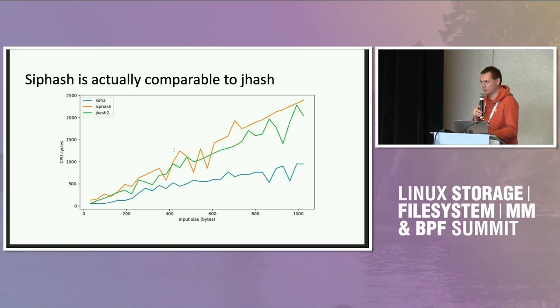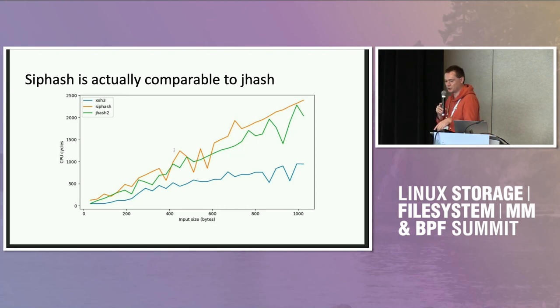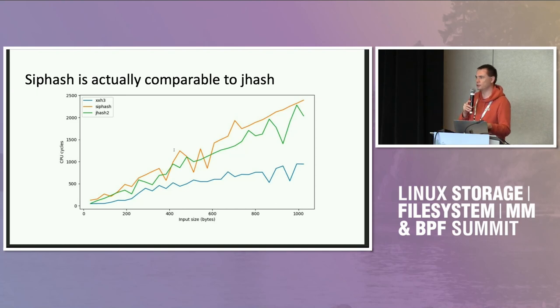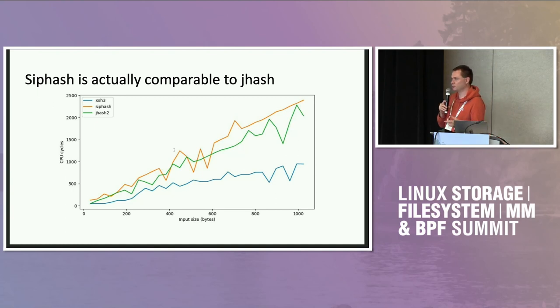Another hash function mentioned last year was zhash. It turns out that in terms of speed it underperforms everything else.